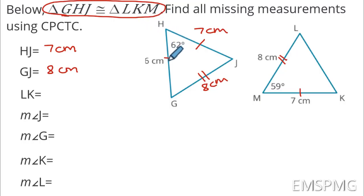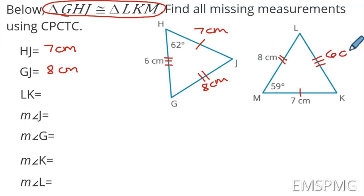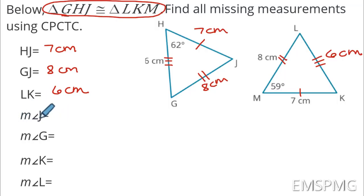The first one asks for HJ. If I look at HJ, they are the last two letters in the first triangle. That means if I look at the last two letters in the second triangle, they are KM. So HJ is going to match KM. Always make sure you're labeling your diagrams to help you visualize this. I already see this is given to me — 7 centimeters. So therefore, HJ is also 7 centimeters.